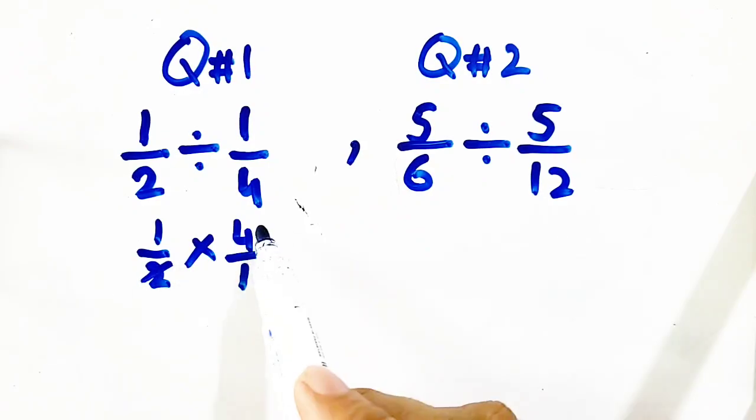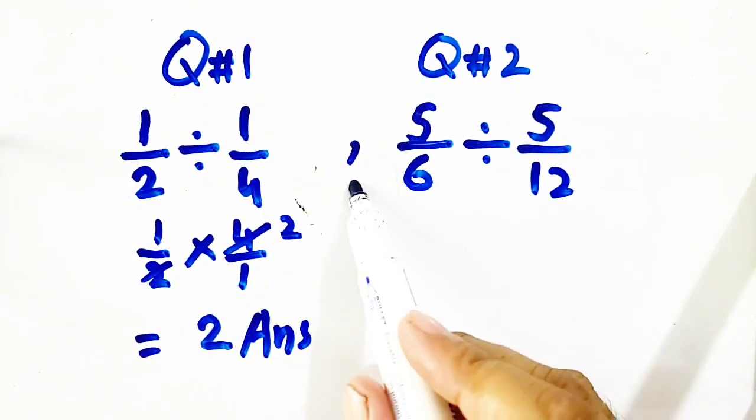Now, here is cancellation. 2 times 2 is 4, so 1 times 2 will be equal to 2. 2 will be its answer.